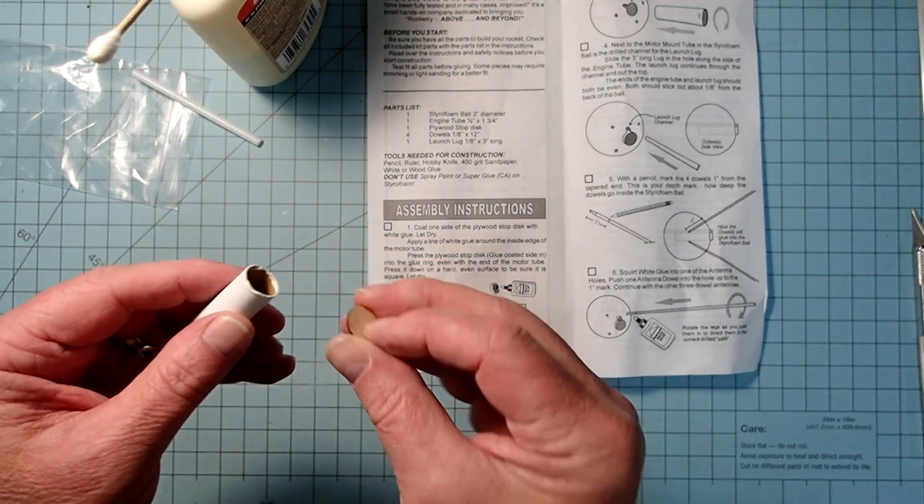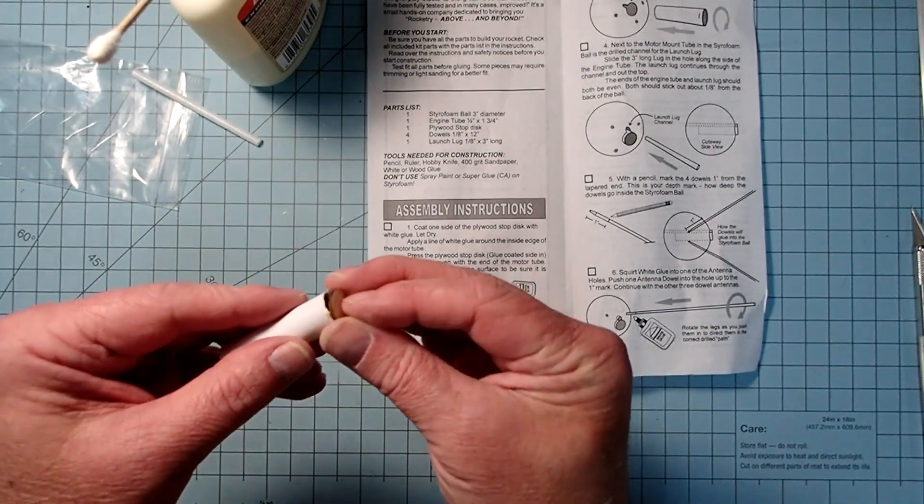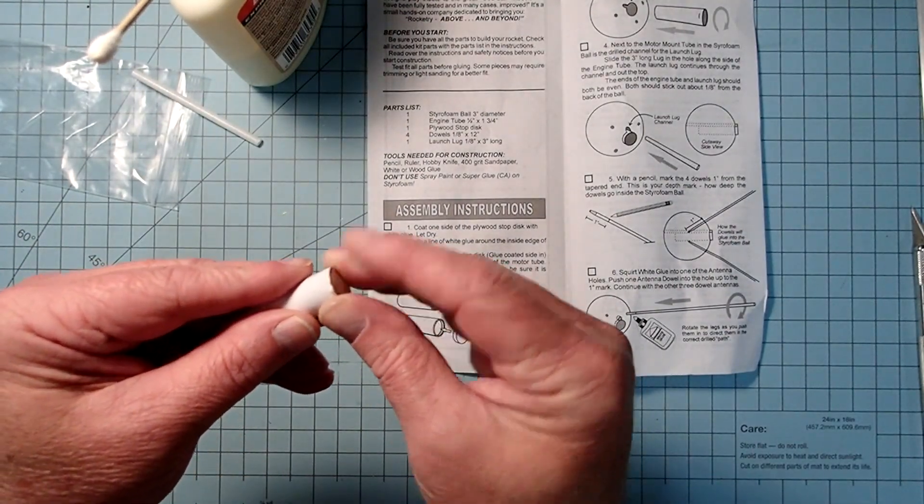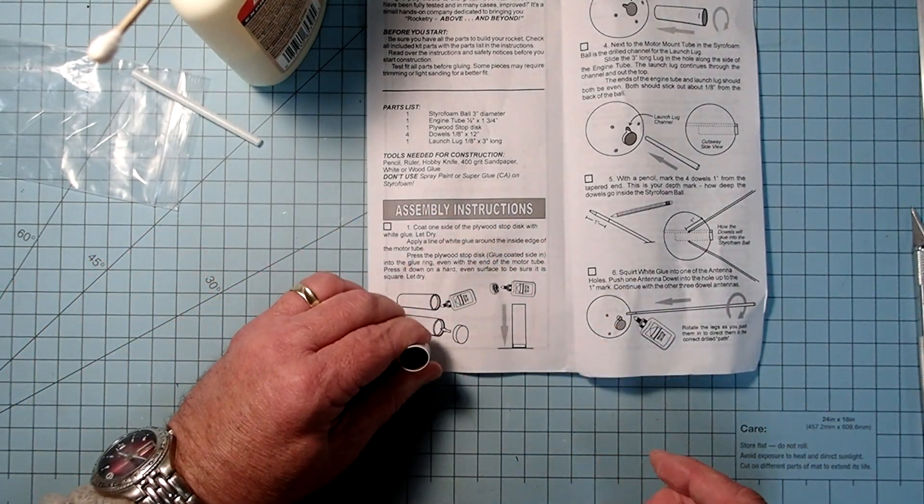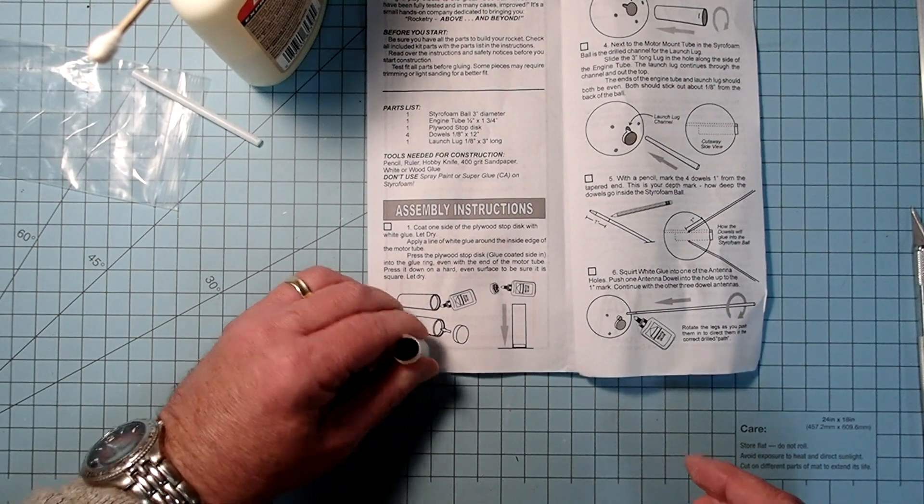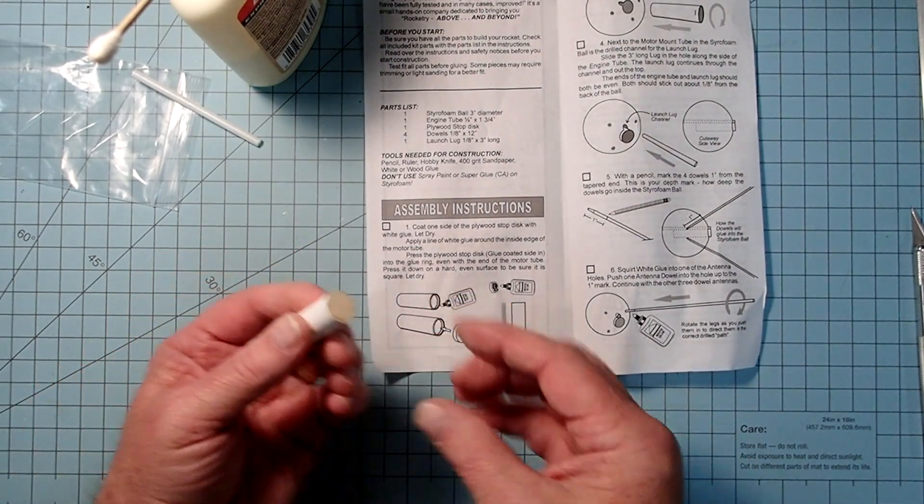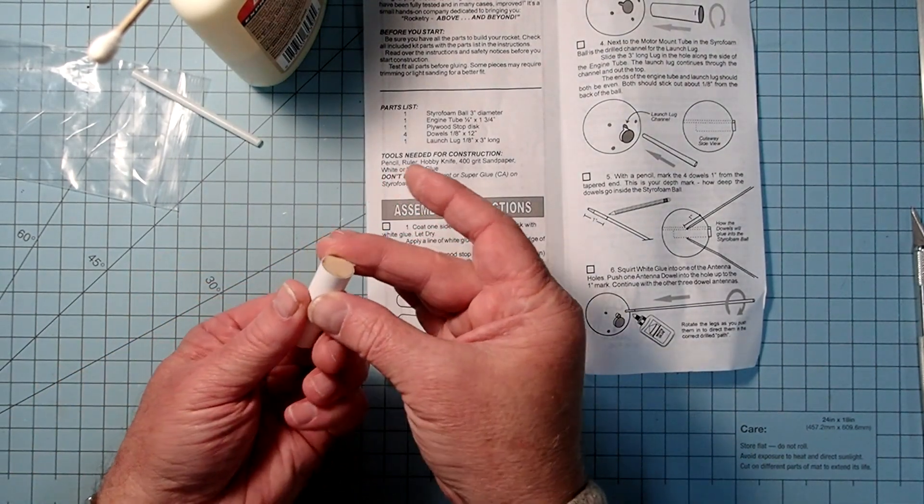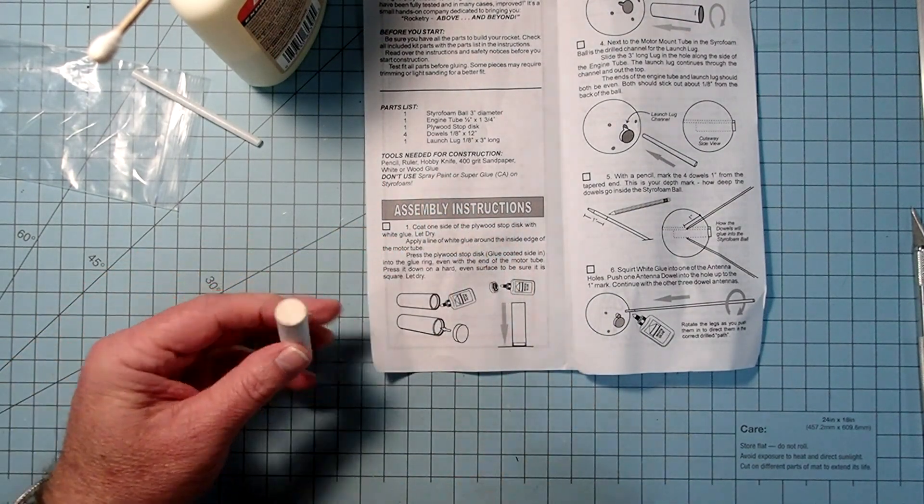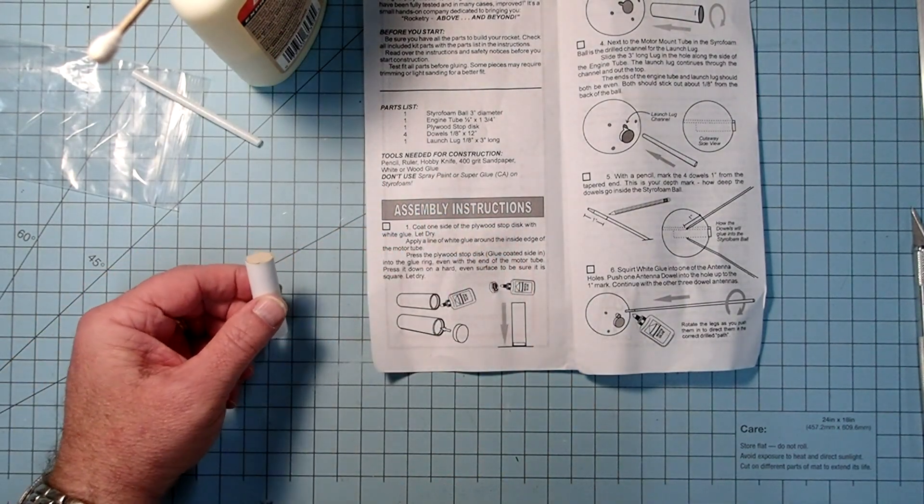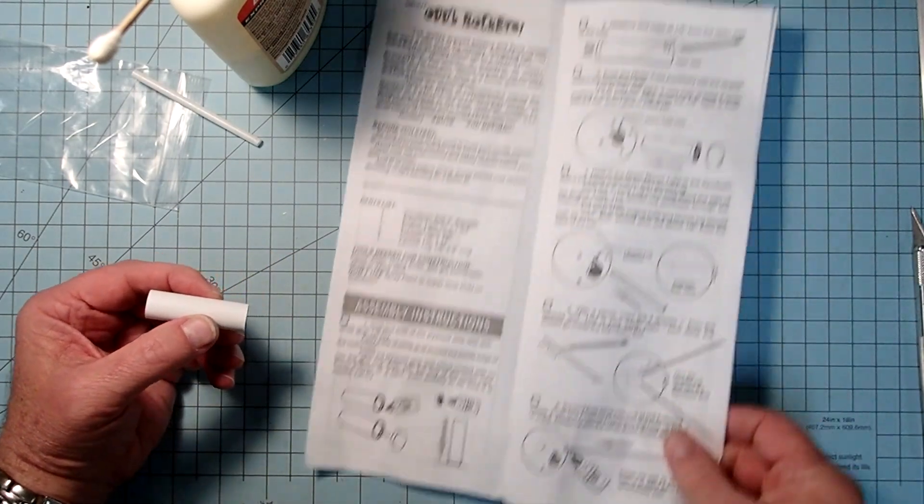And then we're just going to take this just inside there. And then what I'm going to do is just press this down against a flat surface. Make sure it's not something that you don't want glue on. All right, now I'm just going to remove that excess glue.